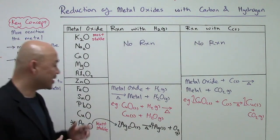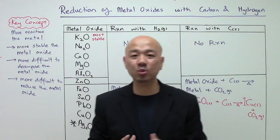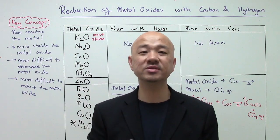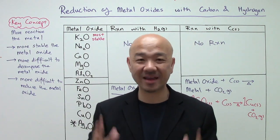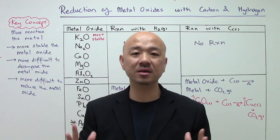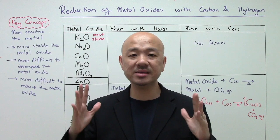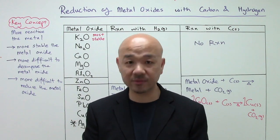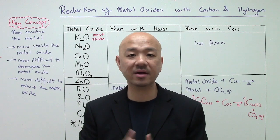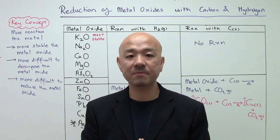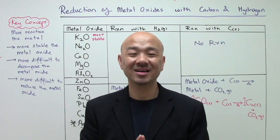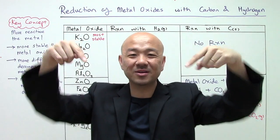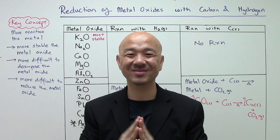That concludes this application of the reactivity series — the reduction of metal oxides with reducing agents hydrogen and carbon. I hope you enjoyed the video and learned a great deal. If you missed the previous videos on metals, do go and watch them as they are very valuable. Please subscribe to our channel to receive more awesome chemistry videos. See you in the next video — thank you and take care.